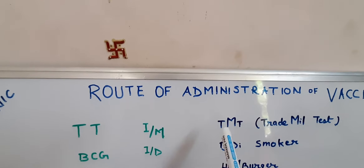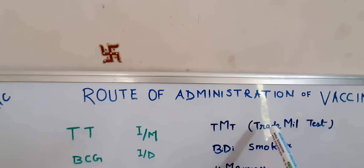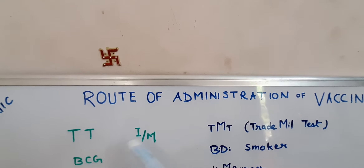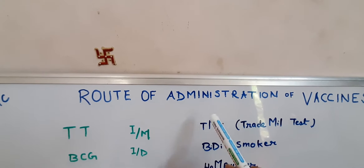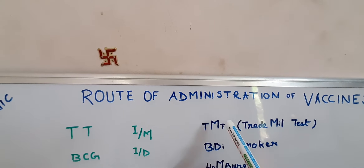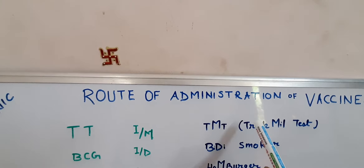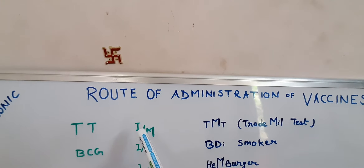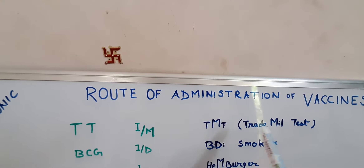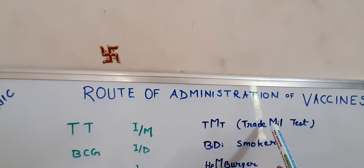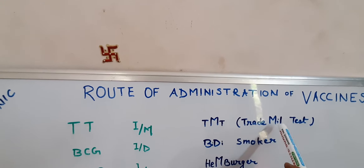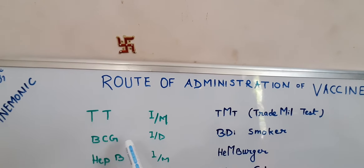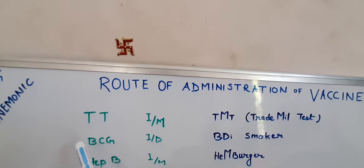For TT, you have to remember 'Treadmill Test.' Here, 'tread' gives us T, 'test' gives us the second T, and 'mill' gives us M for intramuscular. So TT stands for the vaccine and M stands for intramuscular — Treadmill Test.